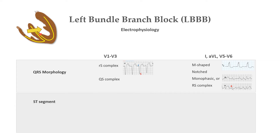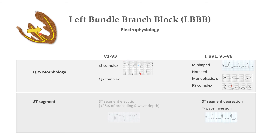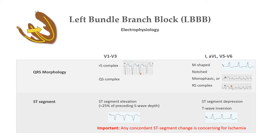How does the ST segment look in bundle branch block? Since in bundle branch block there is abnormal depolarization, this abnormal depolarization is followed by abnormal repolarization. This results in appropriate discordance of the ST segment to the preceding QRS complex. Which means, if QRS complex is positive, the following ST segment will be depressed with inverted T waves, and vice versa. Therefore, lateral leads with tall broad R waves will often have associated ST segment depression and T wave inversion. And those with deep S waves can have an allowable amount of ST segment elevation that is not indicative of ischemia. This allowable amount is ST segment elevation less than 25% of the size of the preceding S wave depth. It shall be noted that any concordant ST segment change is concerning for ischemia.